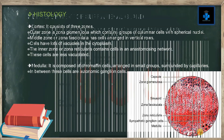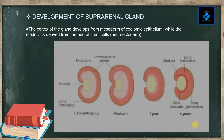Development of the suprarenal gland: The cortex of the gland develops from mesoderm of the coelomic epithelium, while the medulla is derived from the neural crest cells, or neuroectoderm.